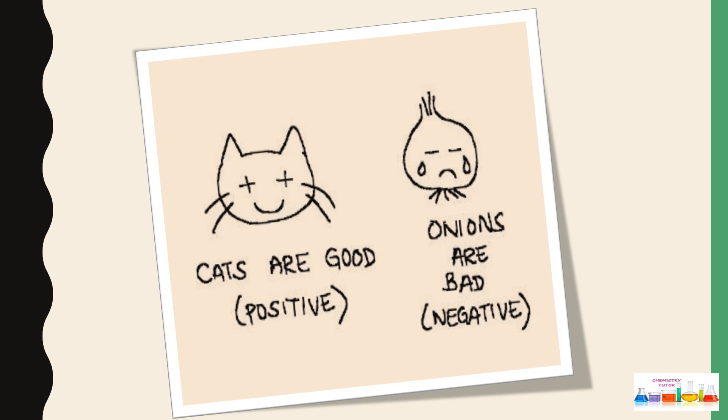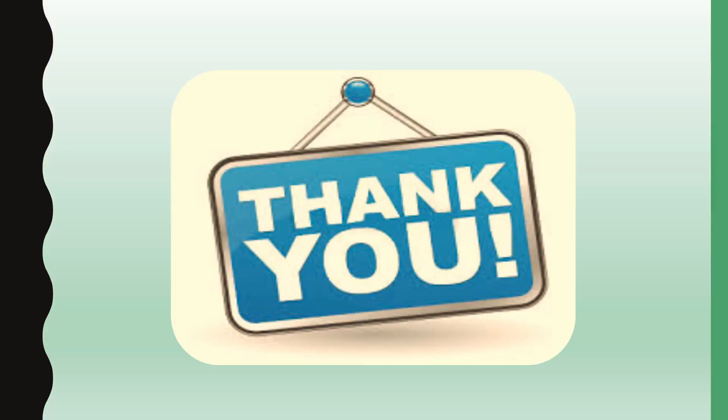Some students are confused between cations and anions. Just remember: cats are good. From cats you can remember cations are positive. Onions are bad. From onions you can remember anions are negative.